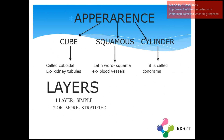Epithelial tissues appear in different forms. When they appear in the form of a cube, they are called cuboidal — an example is kidney tubules. Squamous epithelium is derived from a Latin word 'squama' — an example is blood vessels. The last type is columnar. If the tissue constitutes only one layer, it is known as simple tissue — for example, simple cuboidal, simple squamous, and simple columnar.